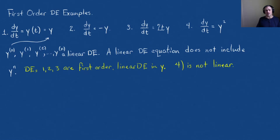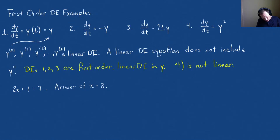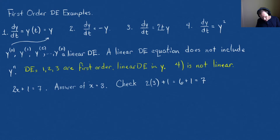Different examples will require different solving strategies. Let's look at how we check solutions. Say the problem is 2x plus 1 equals 7. What if I boldly said the answer is x equals 3? We check by plugging x back into the original equation: 2 times 3 plus 1 is 6 plus 1, which is 7. So x equals 3 is the solution.